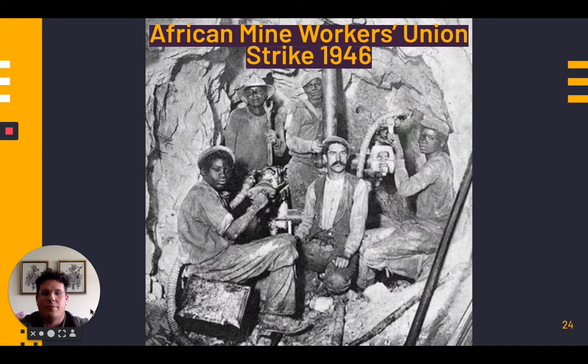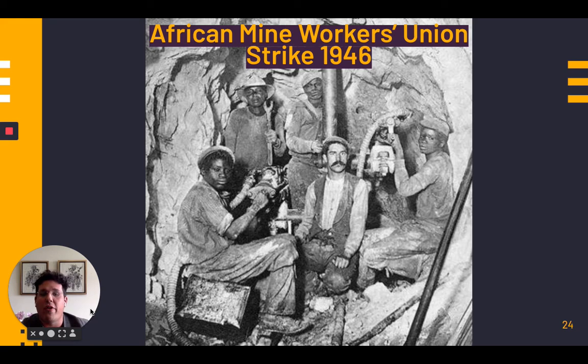In 1946, 100,000 gold miners organized a strike under the leadership of the African Mine Workers Union (AMWU), only to be defeated by the police. The Smuts government's response was to set up the Fagan Commission, which suggested the relaxation of pass laws and the normalization of the status of blacks living in cities — this became the basis for the UP policy manifesto. The NP in opposition set up the Sauer Commission, which concluded that the survival of the white race in South Africa depended on the maintenance of segregation. For established Afrikaners, the latter sounded better.